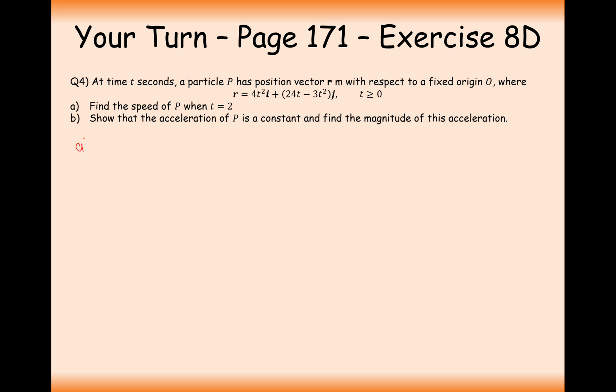Okay, so let's get straight into it then. At time t seconds, the particle has a position vector. So this is a displacement vector of this thing here. Find the speed of p when t equals 2. Well, if we've got a position vector here, then we need to differentiate it to get to a velocity vector. 4t squared differentiates to 8t. And that's for the i components. The next part is going to be 24 minus 3t squared. That's going to differentiate to 6t. 3t squared differentiates to 6t on the j components.